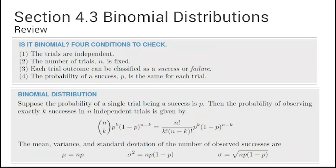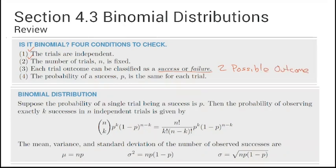We've already talked about binomial distributions a little bit. You had some questions on this for flipping coins and guessing on multiple choice tests where we used very small numbers. Quick review: four conditions to check — the trials must be independent, the number of trials is fixed, each trial is classified as a success or failure, and the probability of success is the same for each trial.